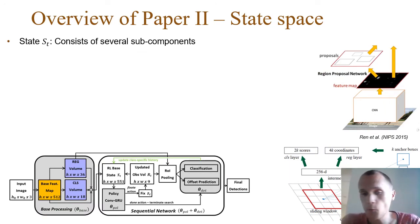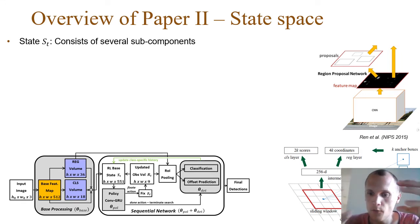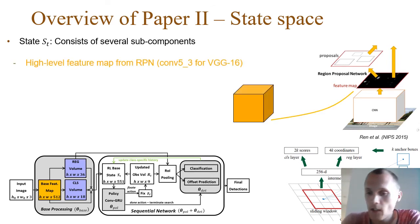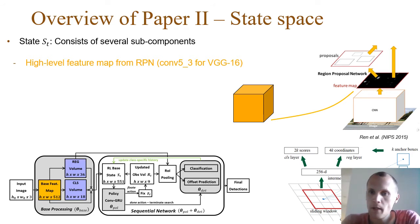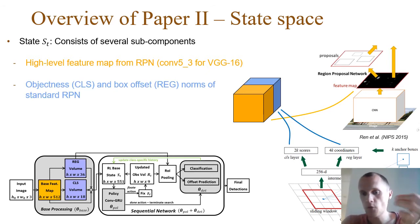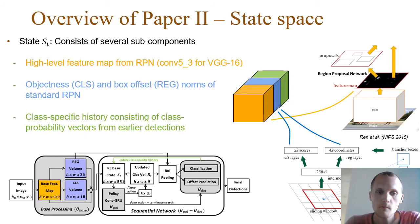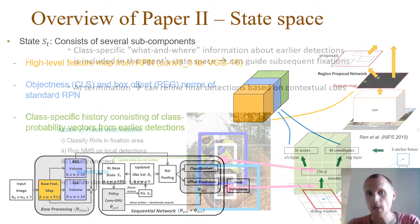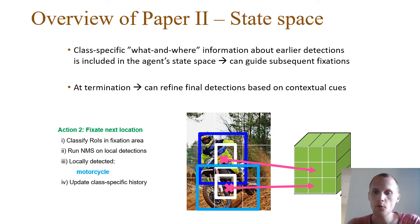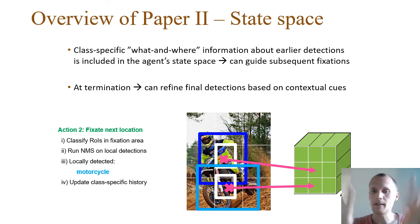The model architecture is based on the Faster R-CNN detector, which is arguably the most common, and shares its base features including a deep feature map and an objectness measure. It also has a class-specific history, which is a coarse representation of what has been seen in the image and where. The image is divided into a set of bins, and the history tracks roughly where and what was seen — for example, the person was seen in the middle and the motorcycle in the bottom part of the image.